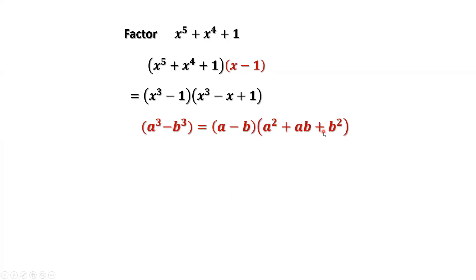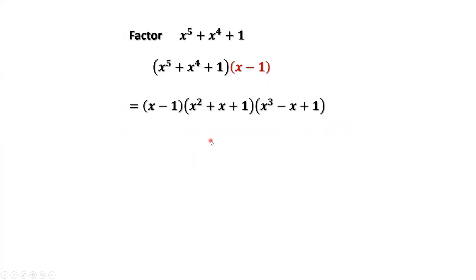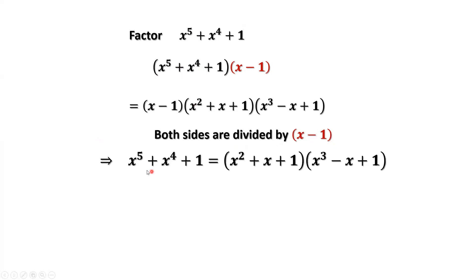We apply the difference of cubes formula to x to the power of 3 minus 1, where 1 can be considered as 1 to the power of 3. Therefore, we have x minus 1 times x squared plus x plus 1 times x to the power of 3 minus x plus 1. Originally, we do not have x minus 1 in this polynomial, so we only need this result. Dividing both sides by x minus 1, we get the final result: x to the power of 5 plus x to the power of 4 plus 1 equals x squared plus x plus 1 times x to the power of 3 minus x plus 1.